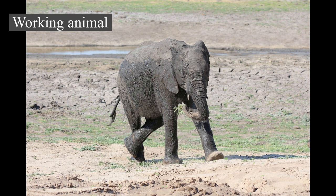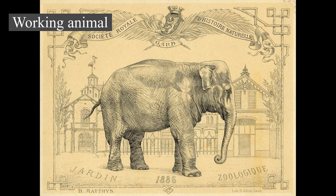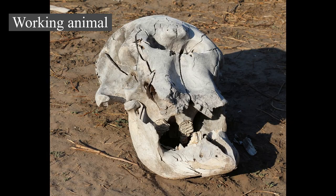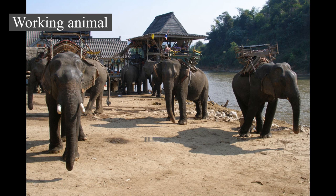Elephants can be trained to respond to over 30 commands. Musth bulls can be difficult and dangerous to work with and are chained and semi-starved until the condition passes. In India, many working elephants are alleged to have been subject to abuse, and are protected under the Prevention of Cruelty to Animals Act of 1960. In both Myanmar and Thailand, deforestation and other economic factors have resulted in sizable populations of unemployed elephants, resulting in health problems for the elephants as well as economic and safety problems for the people amongst whom they live. The practice of working elephants has also been attempted in Africa.